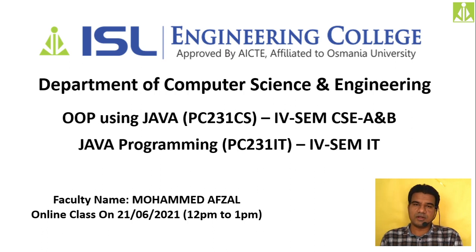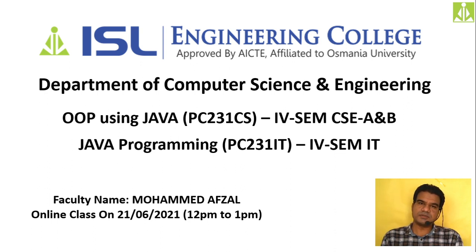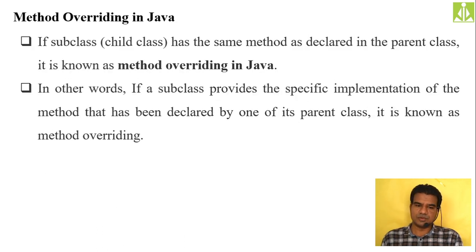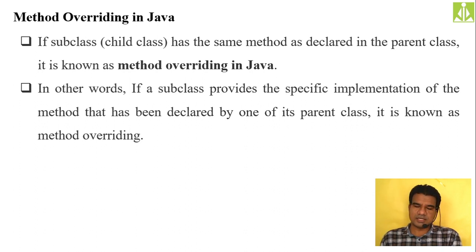In today's class we'll be discussing one of the important concepts in inheritance, that is method overriding. Method overloading we have already covered — method overloading is when within a class a method name is the same but with different parameters. Here in inheritance we will discuss method overriding, where the child class has a method with the same name as defined in the parent class.